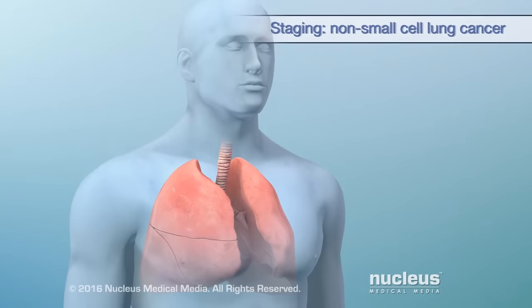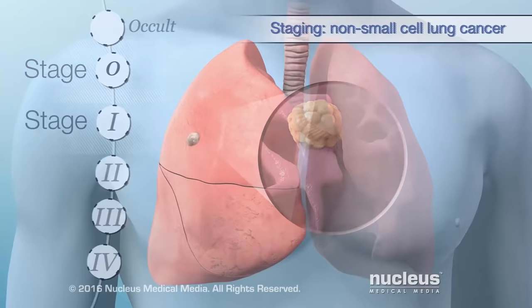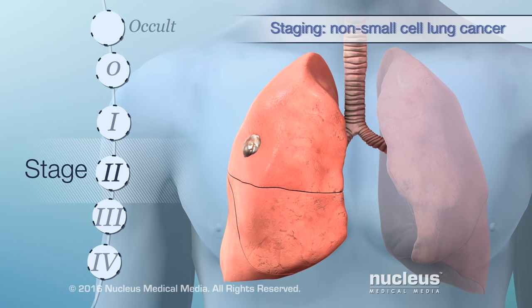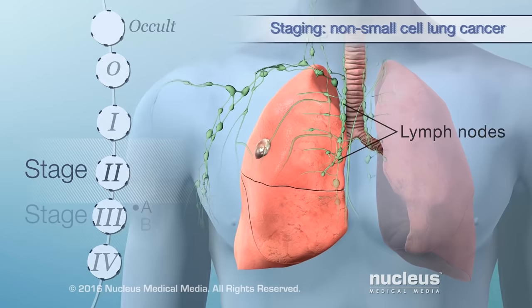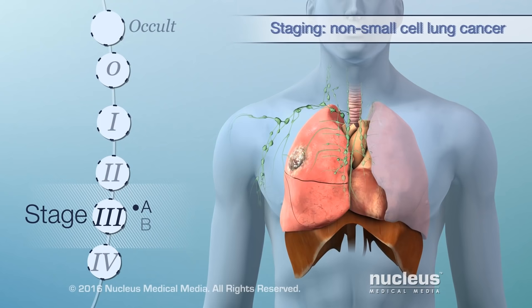In stage 0, abnormal or cancer cells are found in the lining of the airways. By stage 1, a small tumor is found. Then in stage 2, the cancer has grown or spread to nearby lymph nodes or non-lung tissues. In stage 3a, the tumor has grown to any size, and cancer is found in lymph nodes on the same side of the chest or in nearby organs.